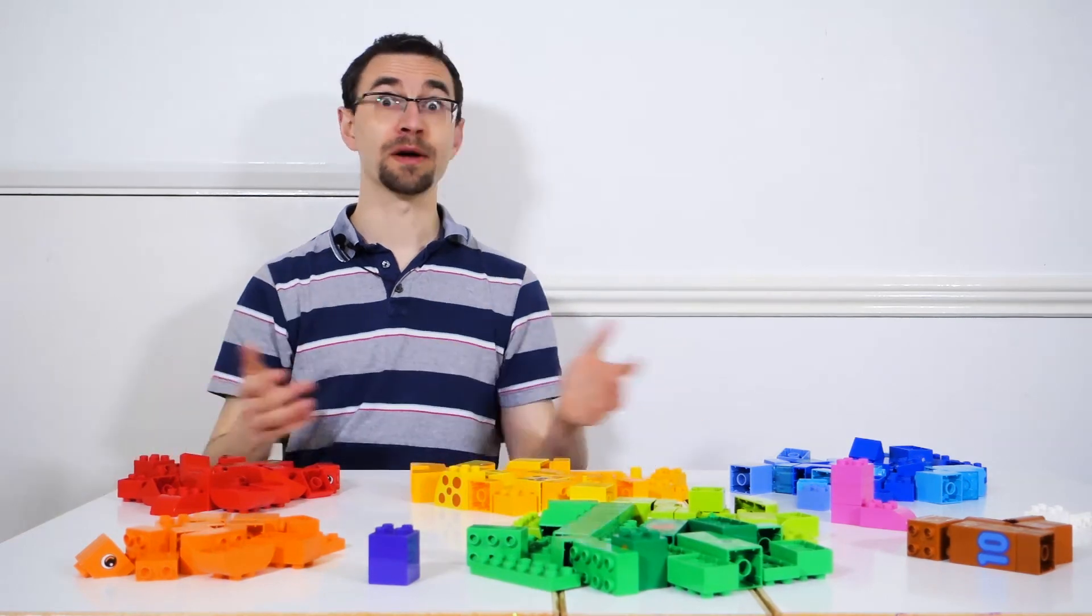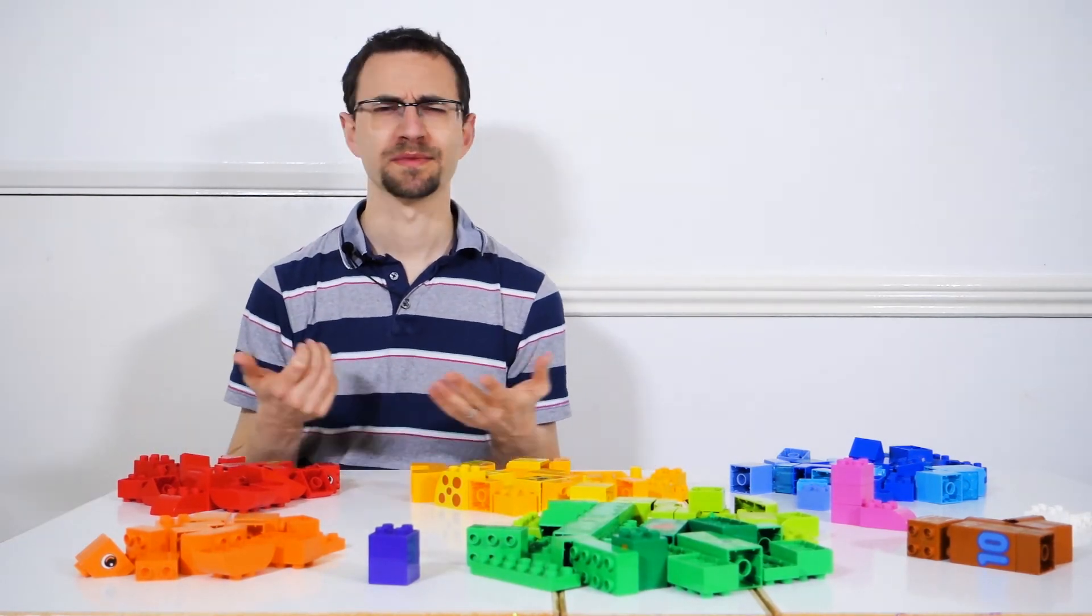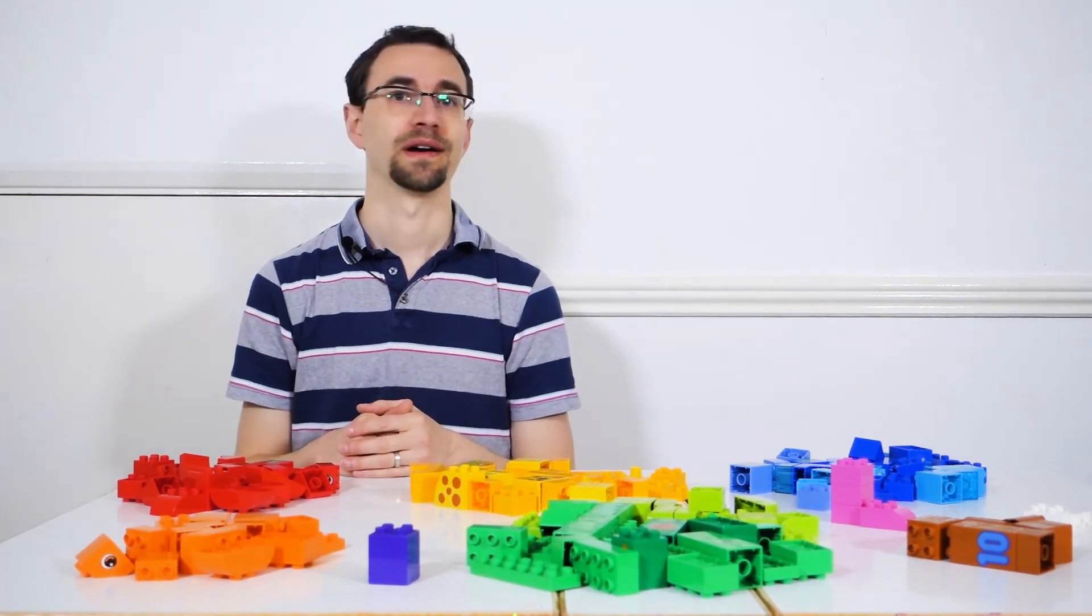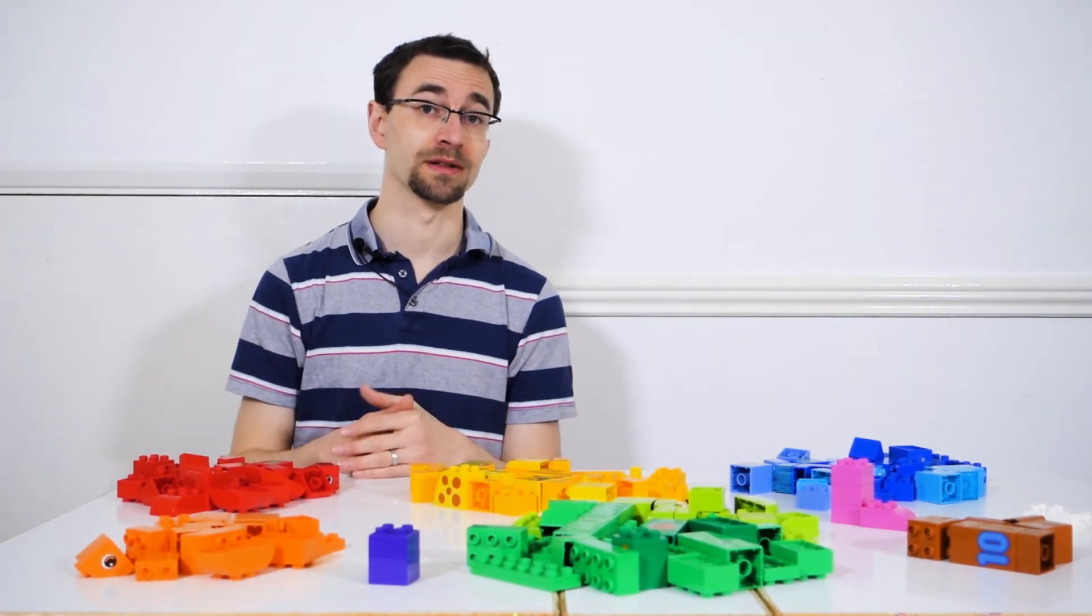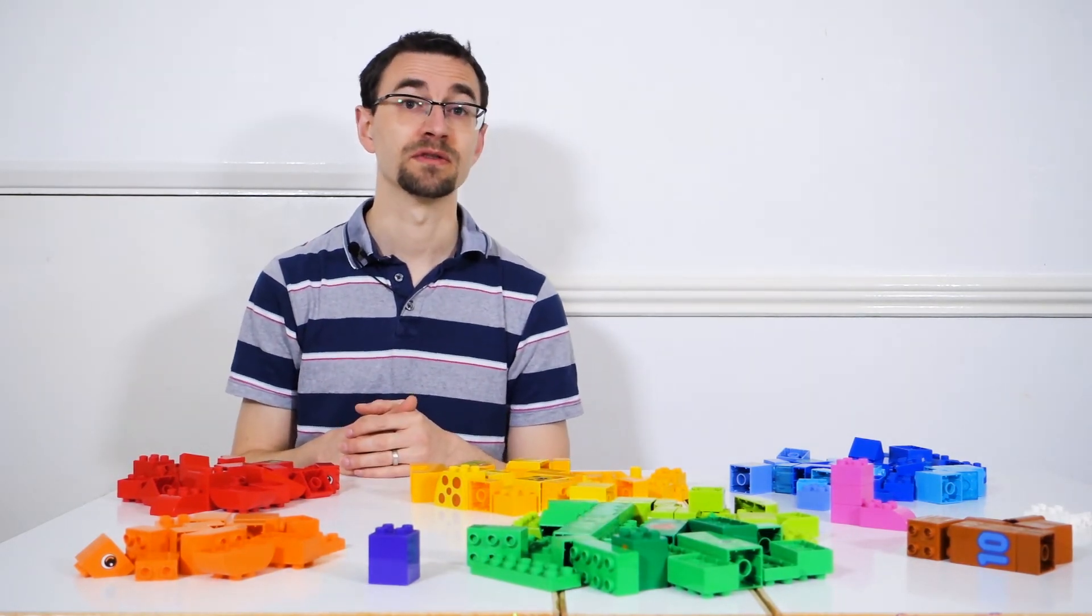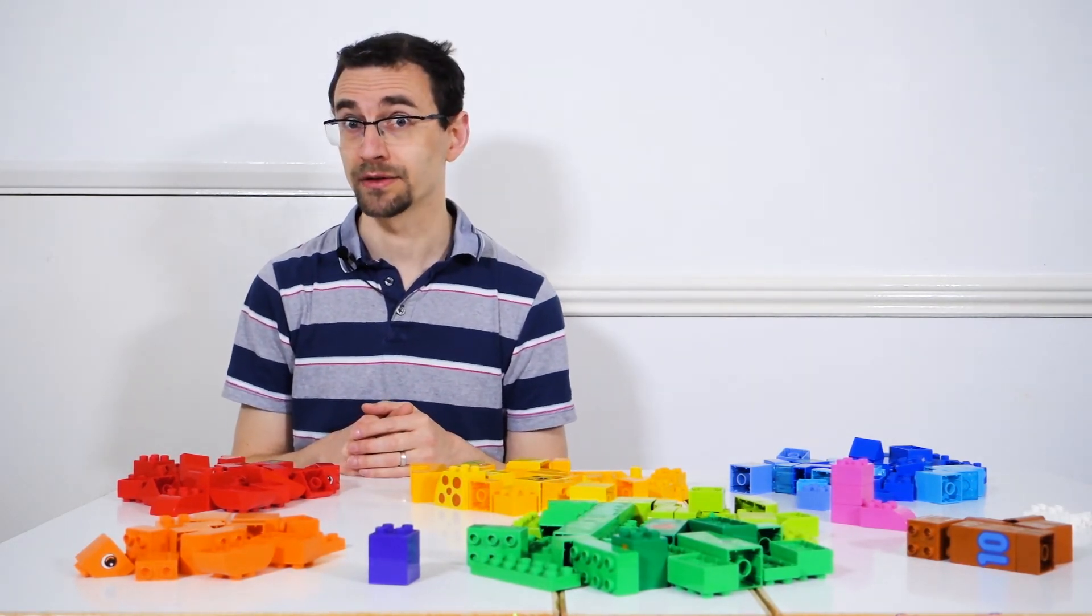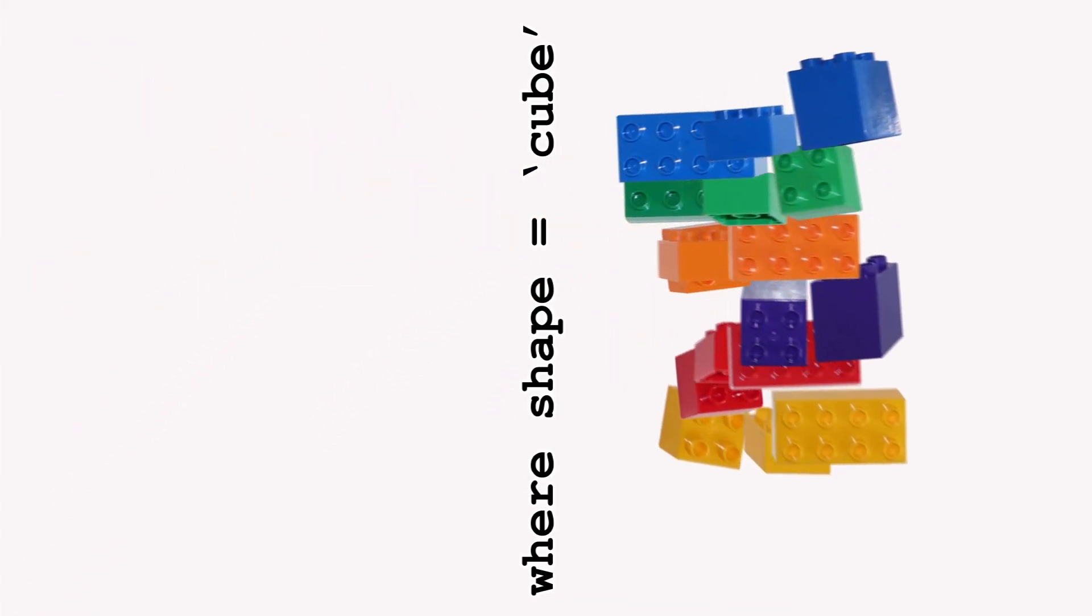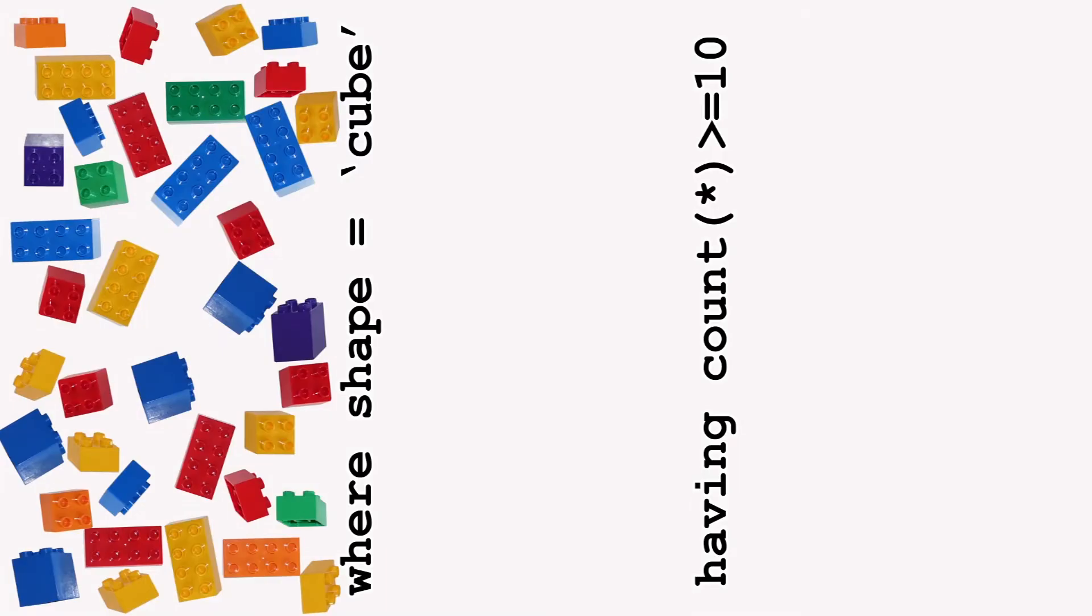So I've grouped my bricks by color but I'm still not sure if I've got enough of each to build my rainbow. I need at least 10 of each color to do so. To find which we've got enough of you may be tempted to do this filtering in your where clause. But databases group rows after the where clause so this doesn't work.